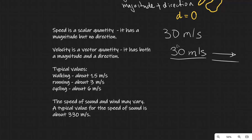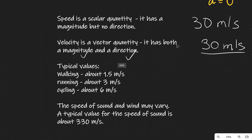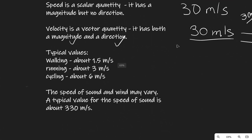Velocity can also be at an angle — for instance, 60 degrees. It's typically represented with a vector and has both a magnitude and a direction. You also need to recall for the exam some typical values for walking, running, and cycling speeds.